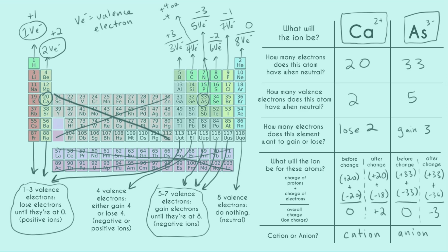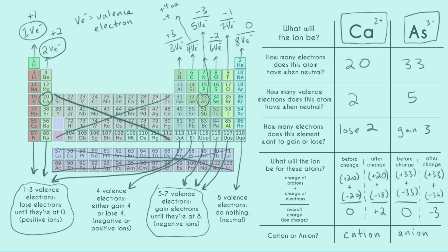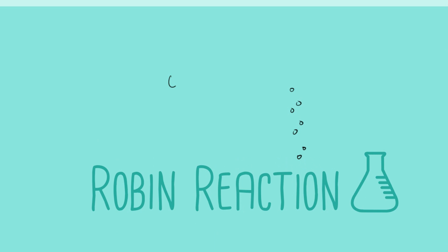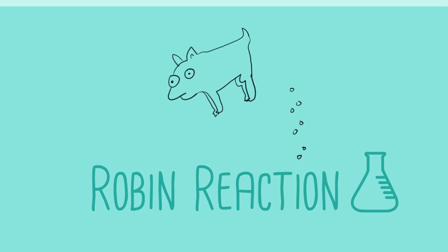I hope this extensive step-by-step explanation of ions, valence electrons, and total electrons was helpful. It's something many people struggle with, but once you understand it, it's really not that bad, and so many other types of chemistry problems become accessible. Happy studying!